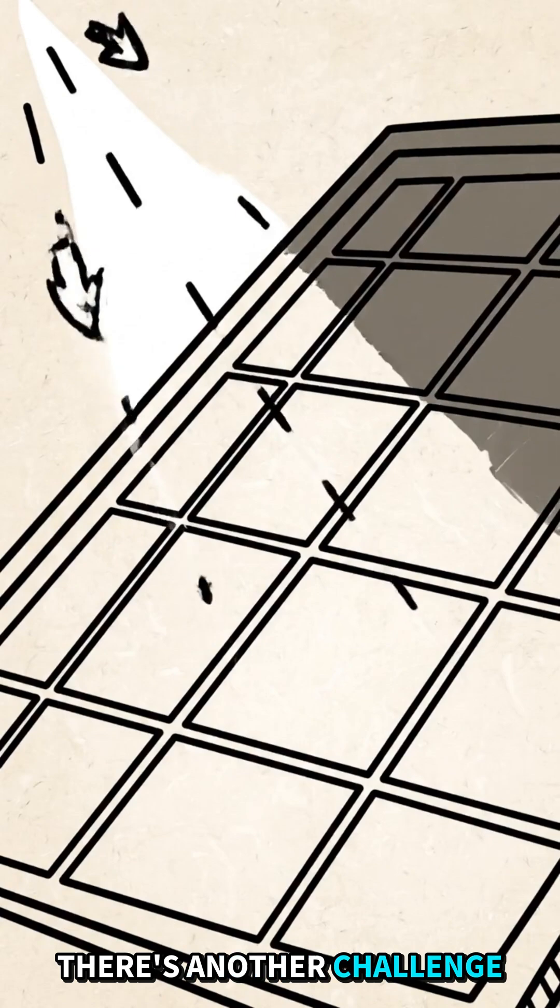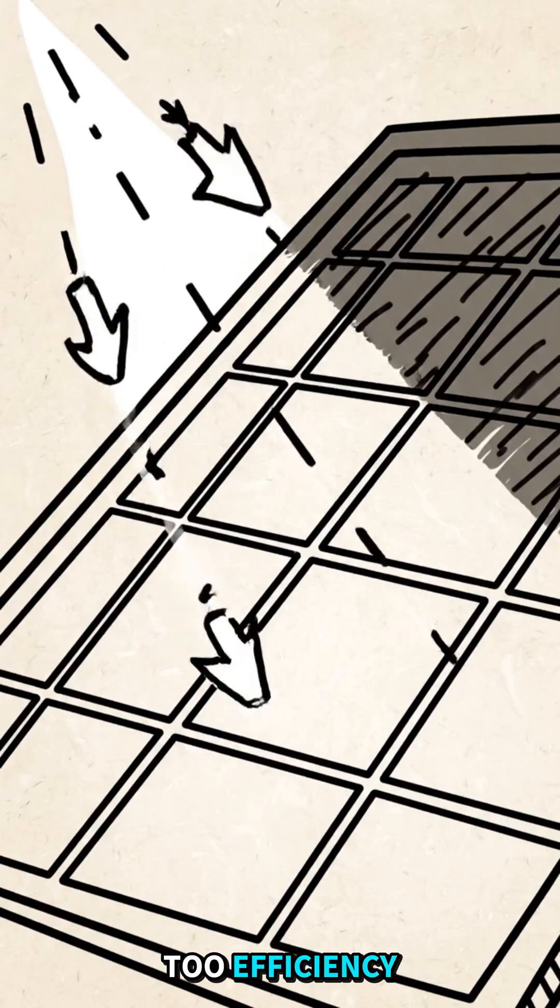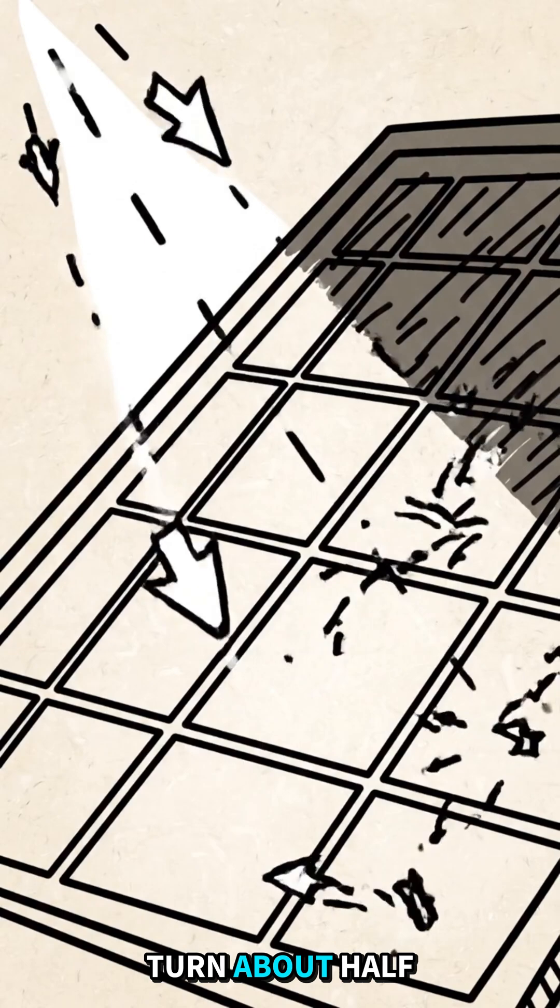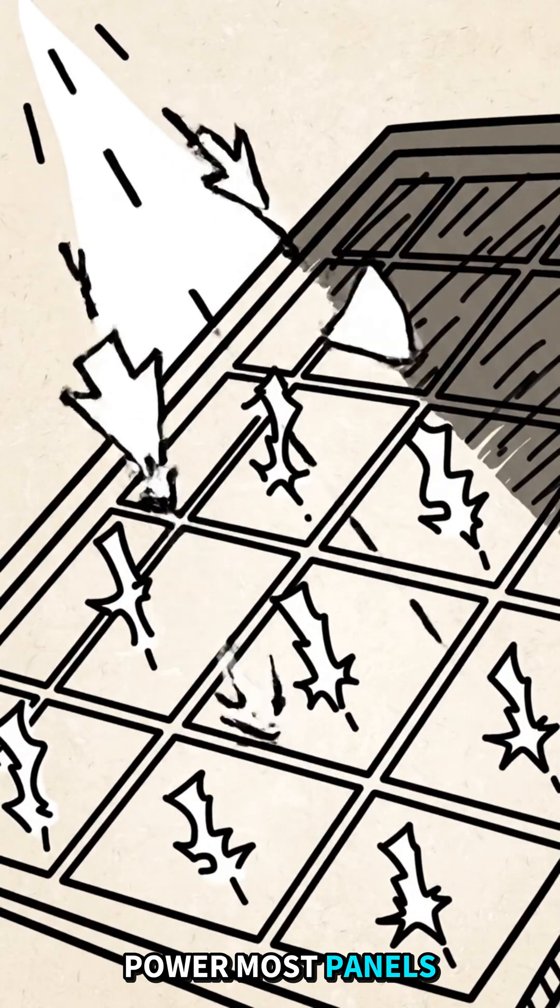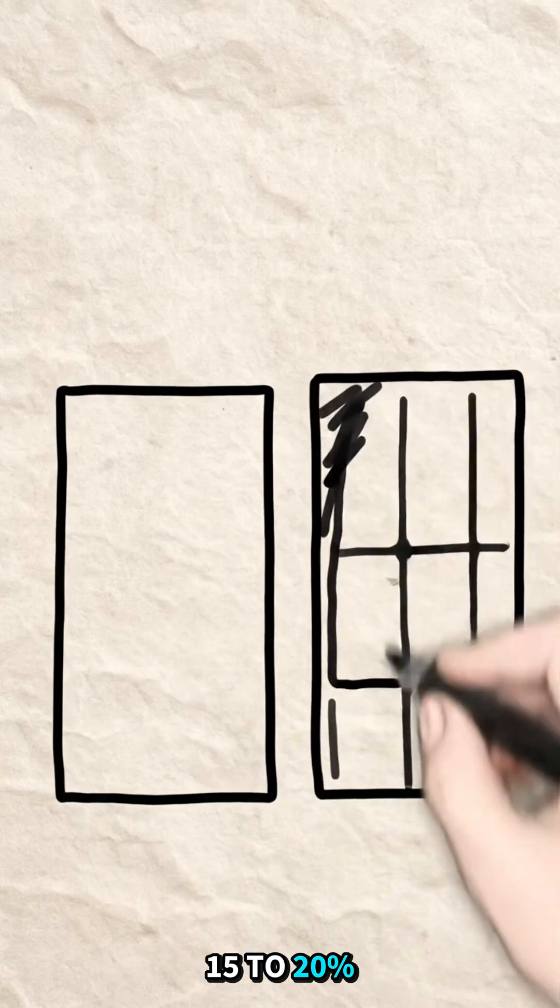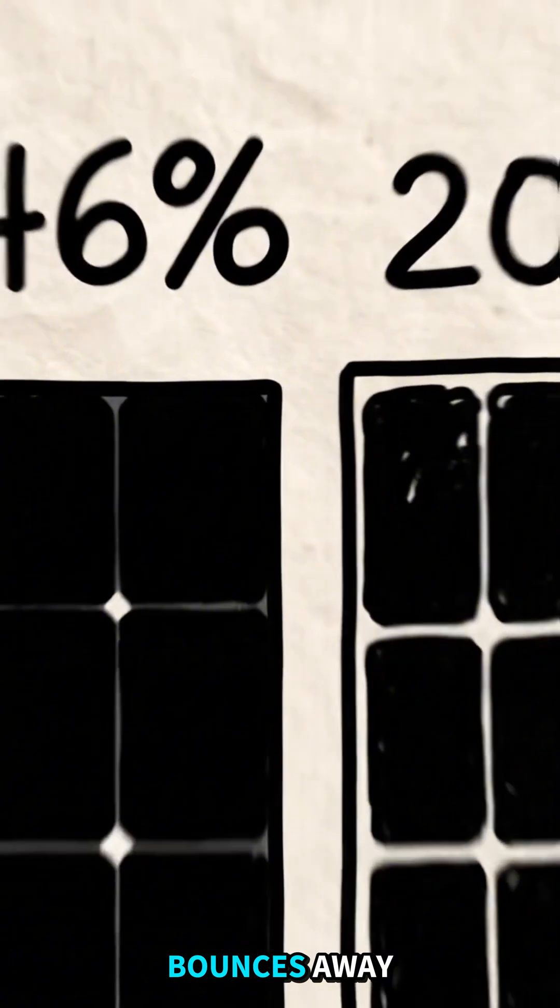There's another challenge, too. Efficiency. Even the best solar cells only turn about half the sunlight they get into power. Most panels today convert around 15 to 20 percent. The rest is lost as heat or light that bounces away.